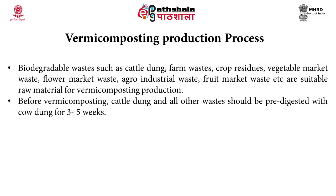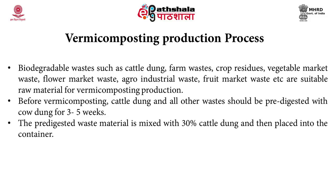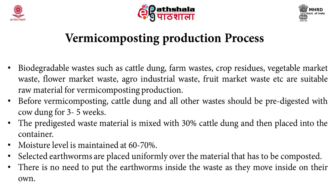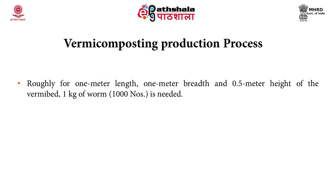Before vermicomposting, animal dung or any substrate should be pre-digested or semi-composted for 3 to 5 weeks. When this material is semi-composted, it is palatable to the earthworms. The pre-digested waste material is mixed with 30 percent cattle dung and then placed in the vermi bin or container. The moisture level is usually maintained at 60 to 70 percent. Selected earthworms are placed uniformly over the material in the bed. For roughly 1 meter length, 1 meter breadth and half meter height of the vermi bed, 1 kilogram of earthworms or about 1,000 earthworms are sufficient.